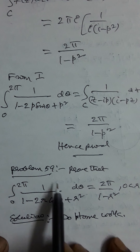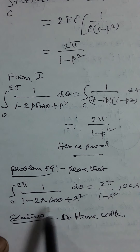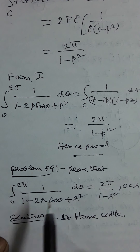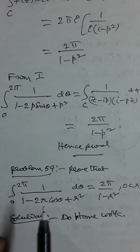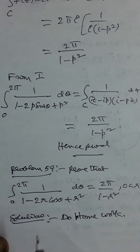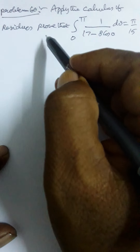Problem 59: Prove that the integral from 0 to 2π of 1/(1 − 2r cosθ + r²) dθ = 2π/(1 − r²), 0 < r < 1. This is given as homework. In the above problem sinθ appears; here cosθ appears, and p is replaced by r. Use the same methodology but find the cosθ value as (z + 1/z)/2, then substitute, factorize, and find residues using the same procedure.